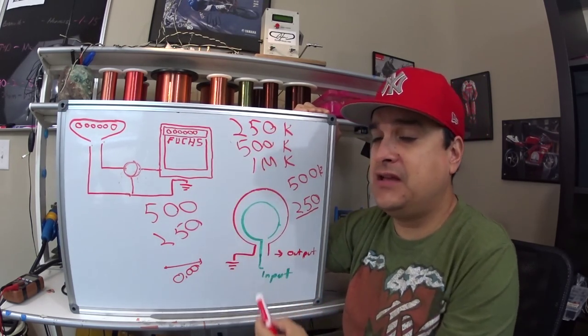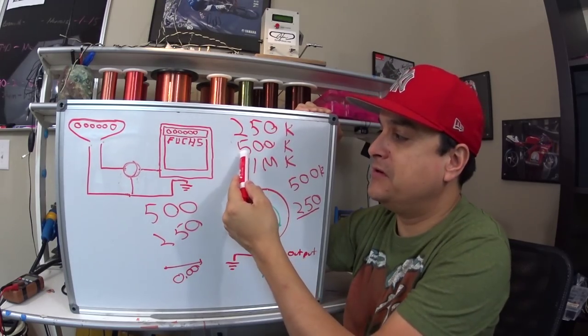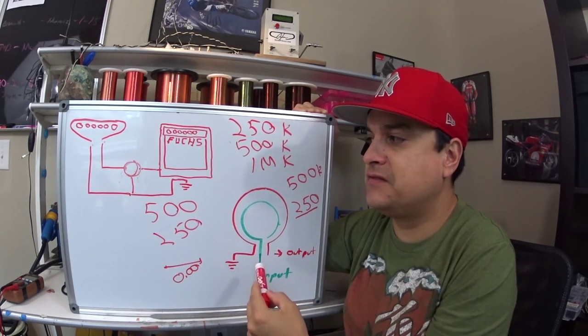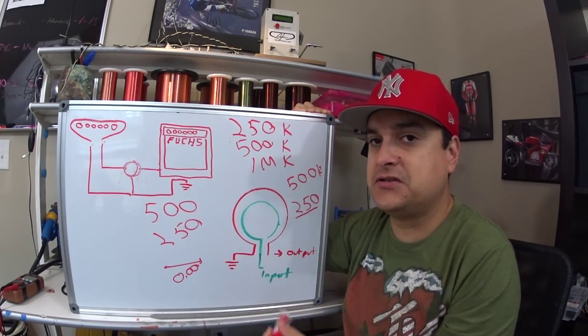I personally would put a 250k pot in it. Actually, I wouldn't. I would actually put a 500k pot in it and put a fatter capacitor. But you could do the same thing.